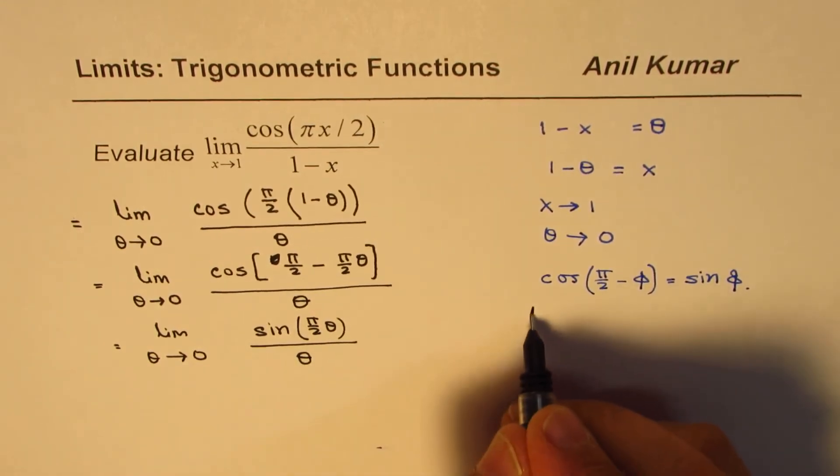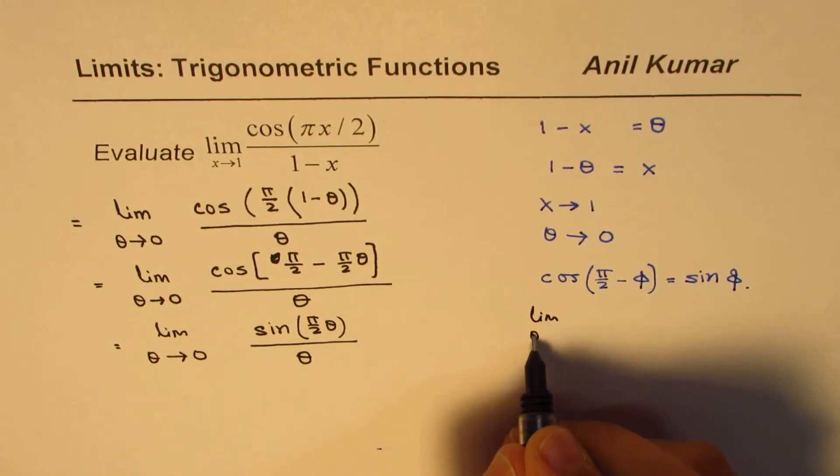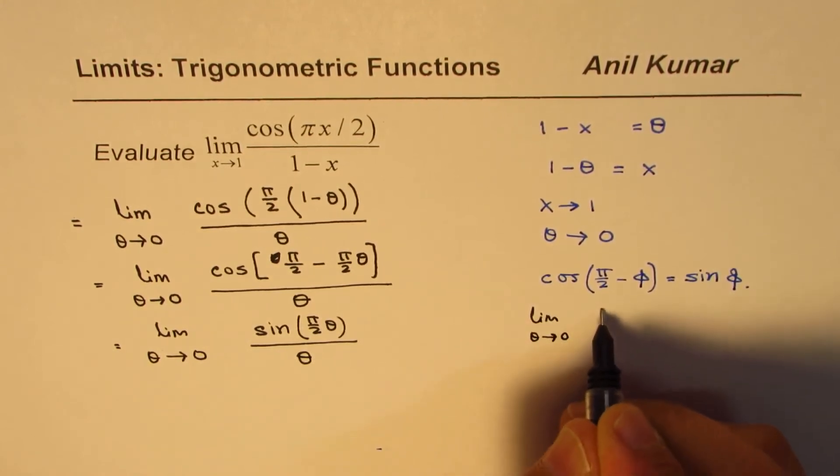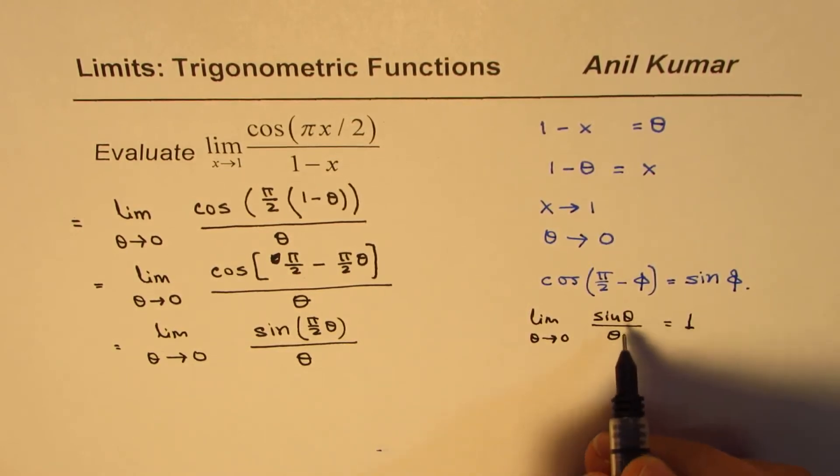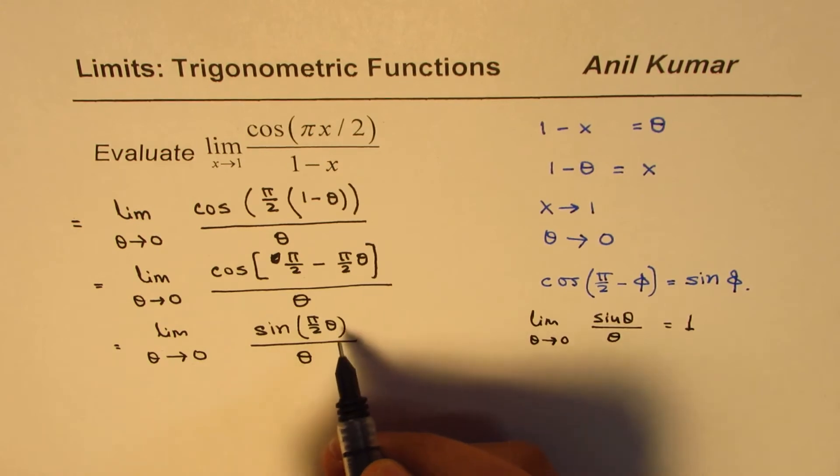Now, we know that limit for θ approaches 0 for sin θ over θ is actually 1. So we can use this principle if θ could be π/2 θ also.